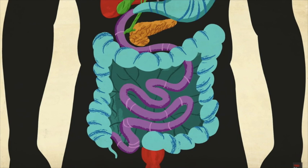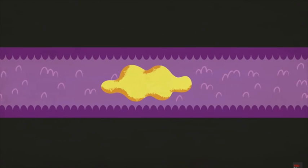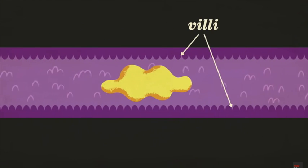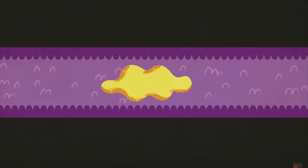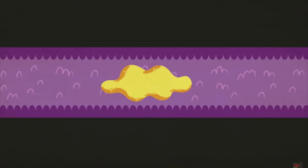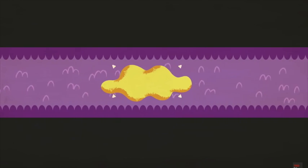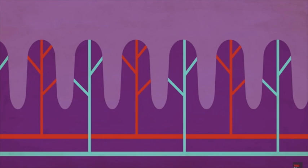The food then moves on to the small intestine. There are tiny projections known as villi that increase the surface area and make the absorption of nutrients more efficient. The nutrients are then absorbed by the blood.